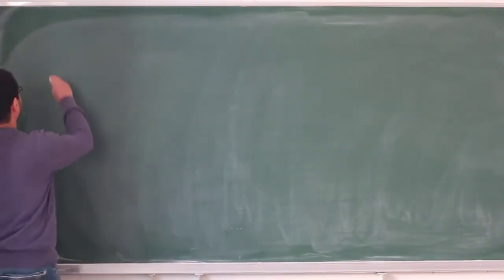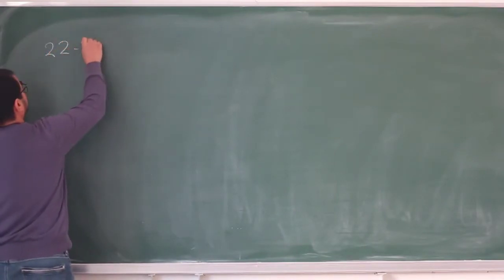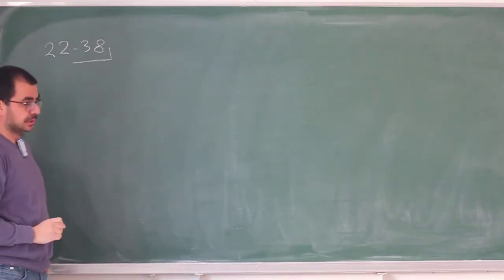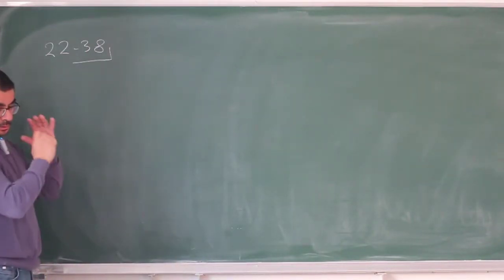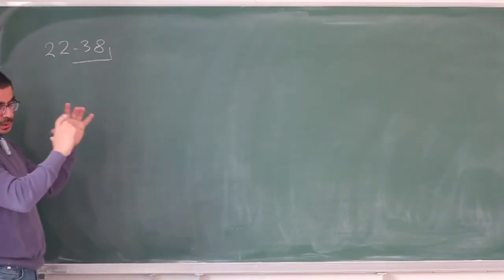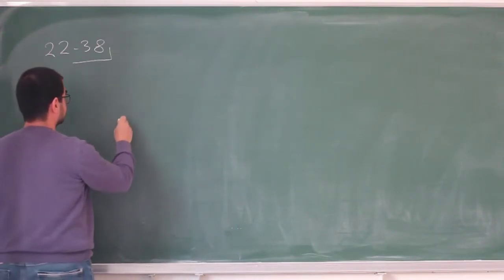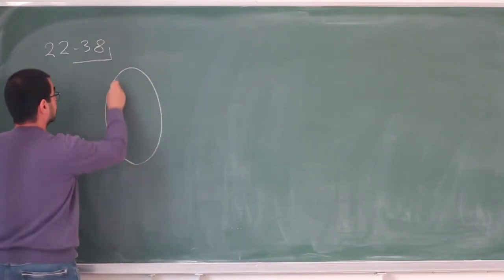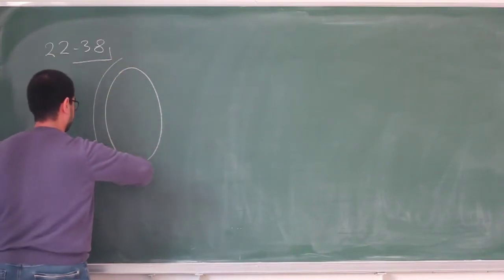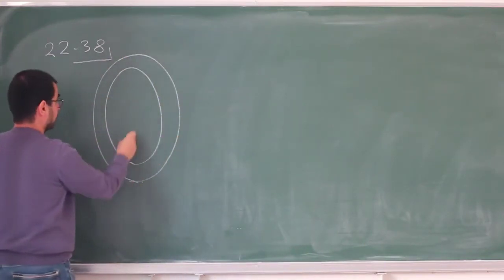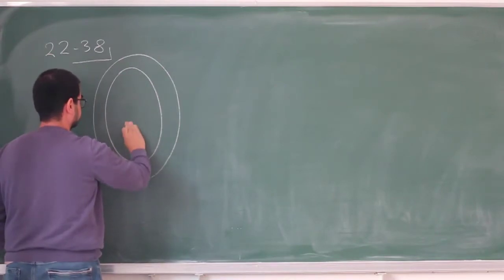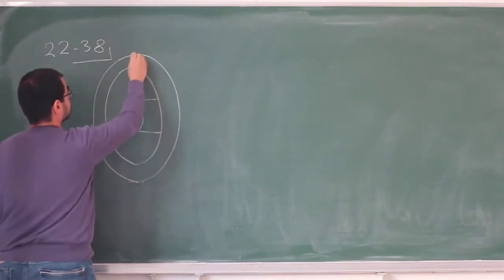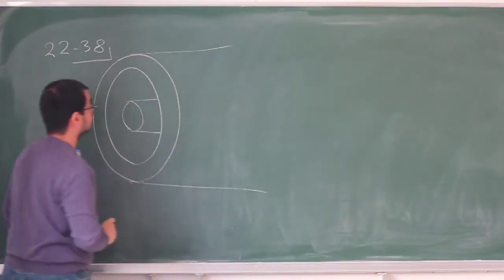This is problem 38 from chapter 22, and it's a very typical application of Gauss's law in electrostatics. In this problem, you have a long cylindrical rod, and it's enclosed in a cylindrical shell. This is my cylindrical shell, and inside this, there's a cylindrical rod. This one extends this way, and this also extends that way.